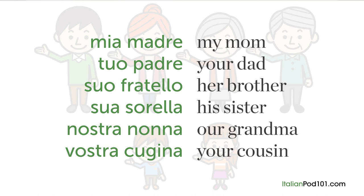However, there are times when we drop the determinative articles in front of possessive adjectives. One time is before nouns of close family members: 'mia madre' — my mom; 'tuo padre' — your dad; 'suo fratello' — her brother; 'sua sorella' — his sister; 'nostra nonna' — our grandma; 'vostra cugina' — your cousin.